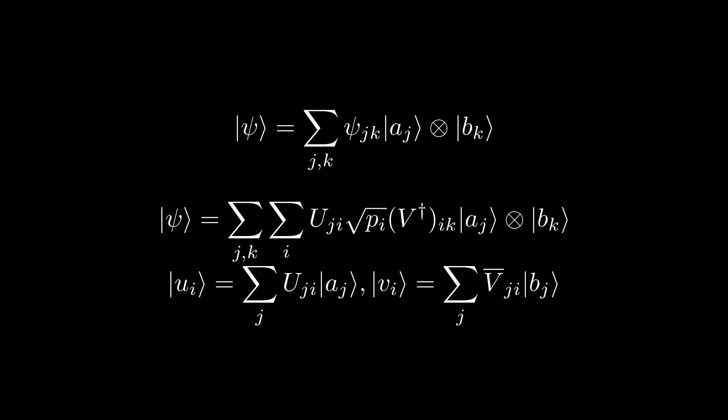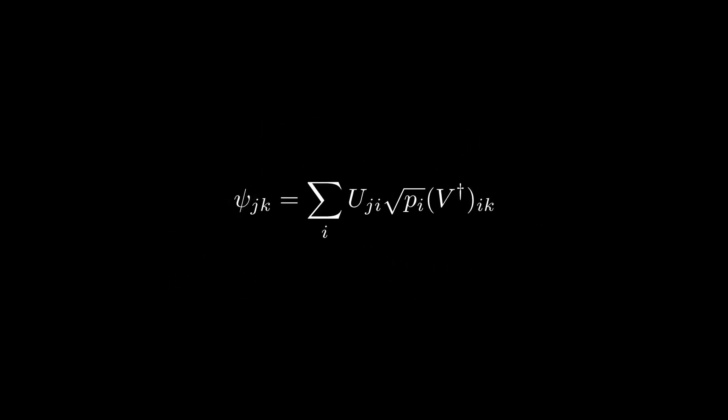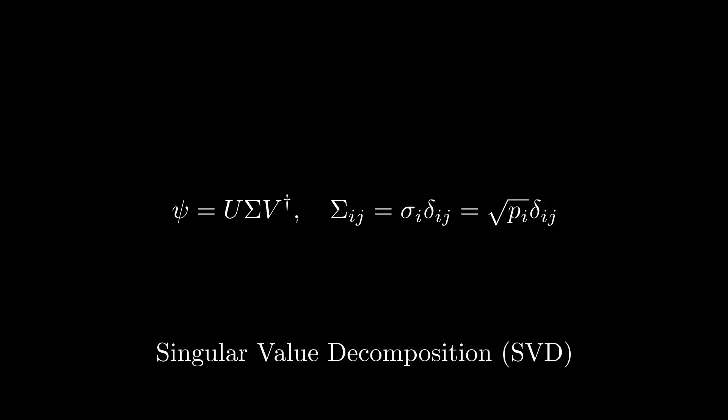Substituting these definitions into the form of the Schmidt decomposition we derived, we can compare the coefficients to those that we started with, in which case we get the following equivalence. If we write the coefficients of psi as a matrix where the row is given by the basis vector in A and the column by the basis vector in B, we simply have the following matrix equation, where sigma is a rectangular diagonal matrix with elements given by square root of P sub i. And this is simply, as it turns out, the singular value decomposition of the psi matrix. Consequently, if we take the coefficients of psi and compute the SVD, the U and V bar matrices give us the change of basis required to take us from our original orthonormal bases to the Schmidt bases, and the singular values in sigma tell us the coefficients of the decomposition.